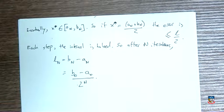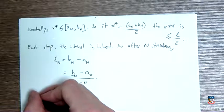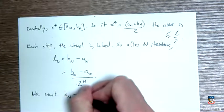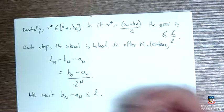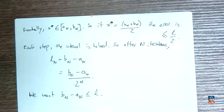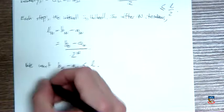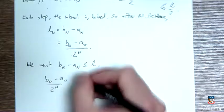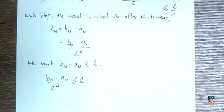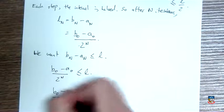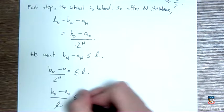We need to use this to calculate n. We want this bₙ minus aₙ, we want this lₙ to be less than or equal to this maximum width l. I've got this tolerance of error, the width of my final interval, which I want to be no more than l. So that means that I need to have (b₀ - a₀)/2ⁿ less than or equal to l. Essentially, I want to just solve this for n. So b₀ take away a₀ over l has got to be less than 2 to the power of n.